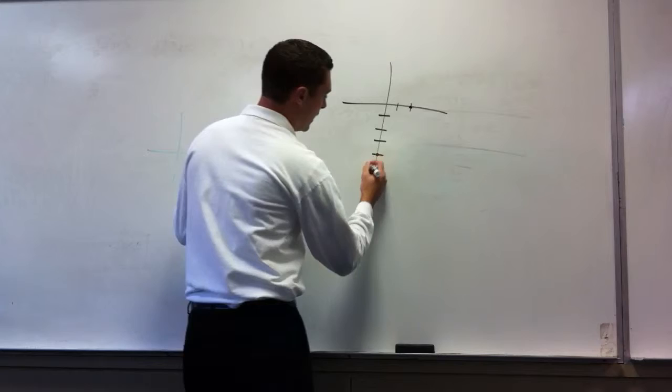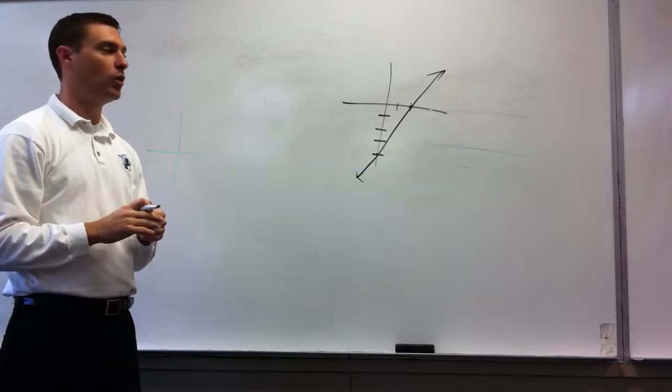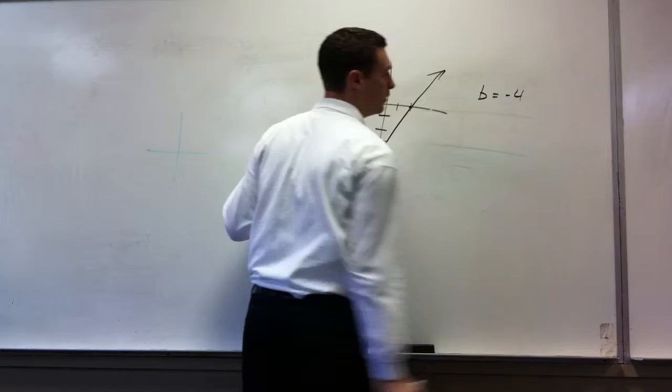Okay, so if this is my line that's coming through here, can I tell either one of those bits of information? Can I find the slope or the y-intercept? What's the easiest thing to find? The y-intercept. Where does the line cross the y-axis? Negative 4. So that tells me that b, the y-intercept, equals negative 4.